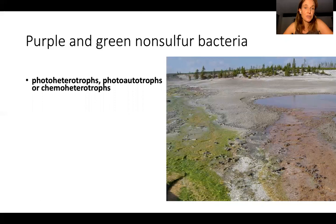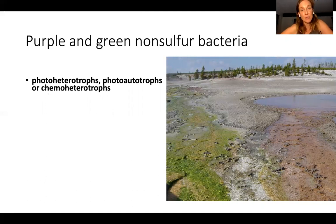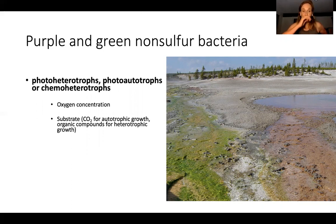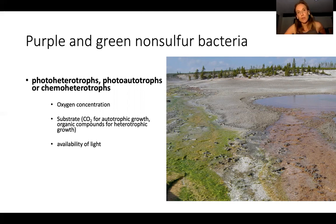The non-sulfur bacteria are kind of interesting because they fluctuate between photo-heterotrophs, photoautotrophs, and chemoheterotrophs — chemo meaning they're not photosynthetic and are getting electrons from organic material or rocks. They're fairly biochemically complex and versatile. Which form of metabolism they use depends on oxygen concentration and where they're growing: if they have CO2 available they can use atmospheric carbon; if growing in decomposing material they can use that; and the amount of light determines whether they'll be phototrophs or chemotrophs.